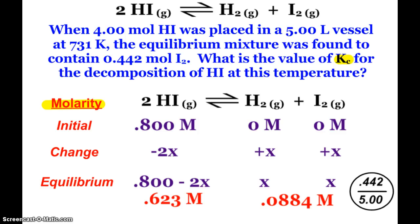So hopefully your ICE table looks like this. 4 moles in a 5 liter vessel, so my initial concentration is 0.800 molar. Of course, my products are 0. My change comes from the balanced equation.